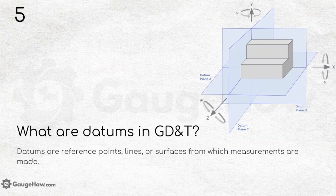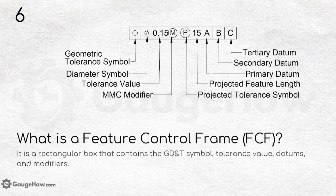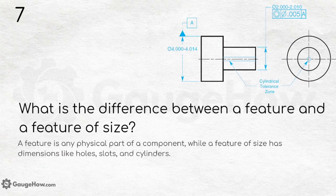What is a feature control frame? It is a rectangular box that contains the GD&T symbol, tolerance value, datums, and modifiers. Basically, the FCF is the heart of geometric dimensioning and tolerancing — it is how you check the tolerance of an entire drawing. You can see the examples presented.